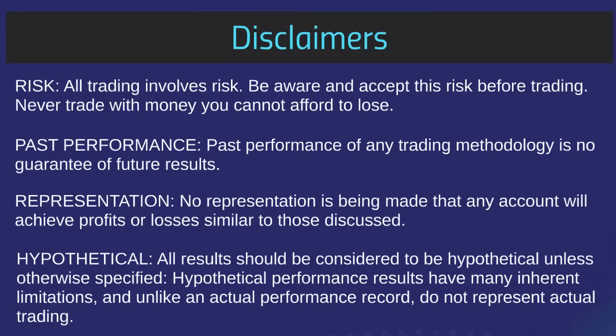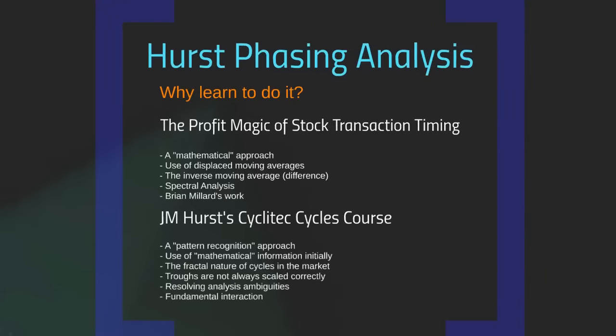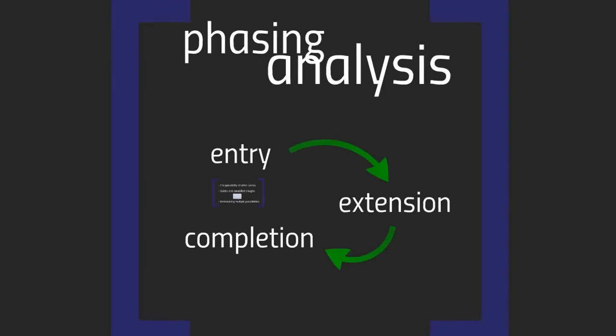Let's catch up with where we are. J.M. Hurst wrote a book called The Profit Magic of Stock Transaction Timing, published in the late 1960s, presenting a mathematical approach to identifying cycles in financial markets. In the early 1970s he published his Cyclitech Cycles course, which presented a very different, manual way of performing that analysis — presenting the same ideas about how cycles work but with a different analytical process.